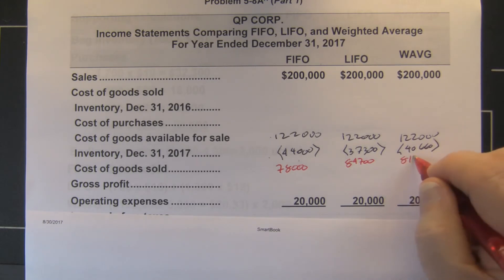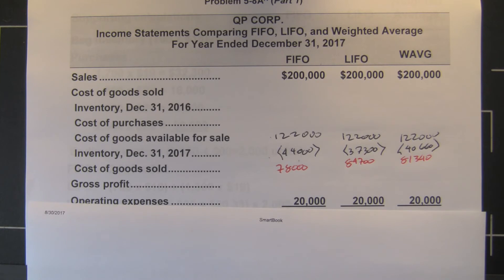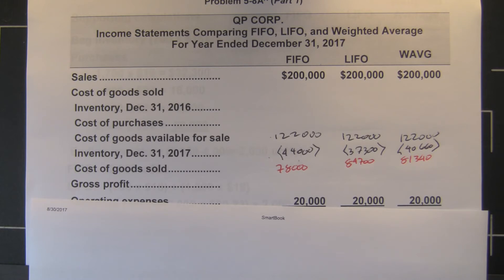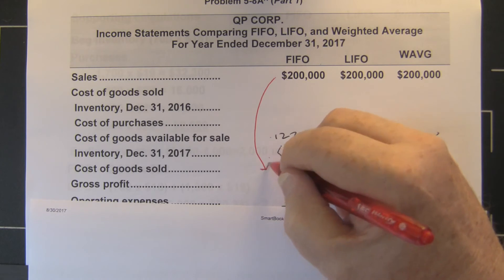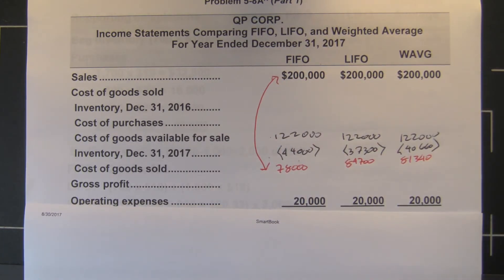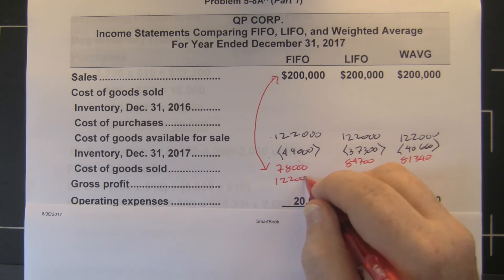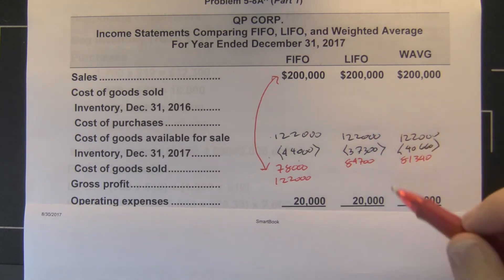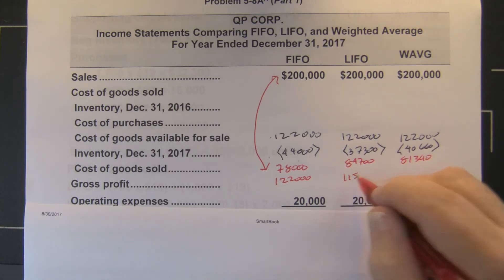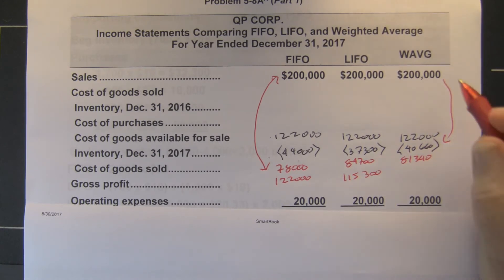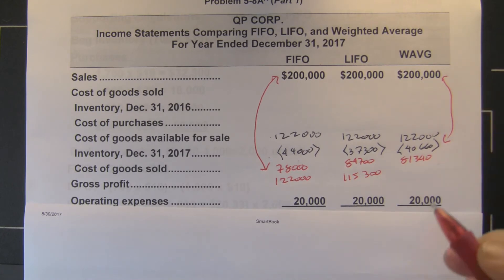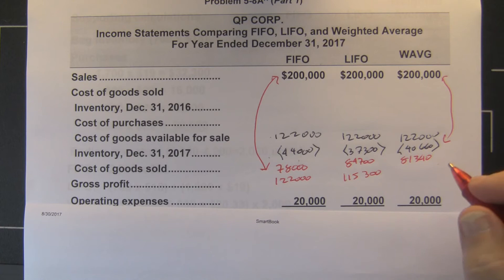Gross profit is cost of goods sold subtracted from sales. So when we take $78,000 from $200,000, our gross profit under FIFO is $122,000. Under LIFO it's $115,300. And when we subtract $81,340 from $200,000, our gross profit under weighted average is $118,660.